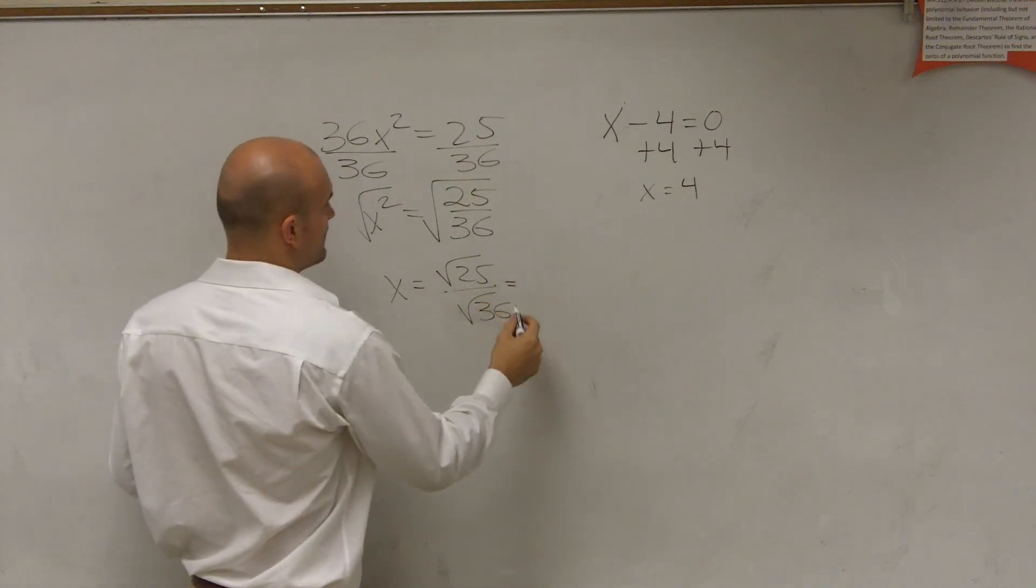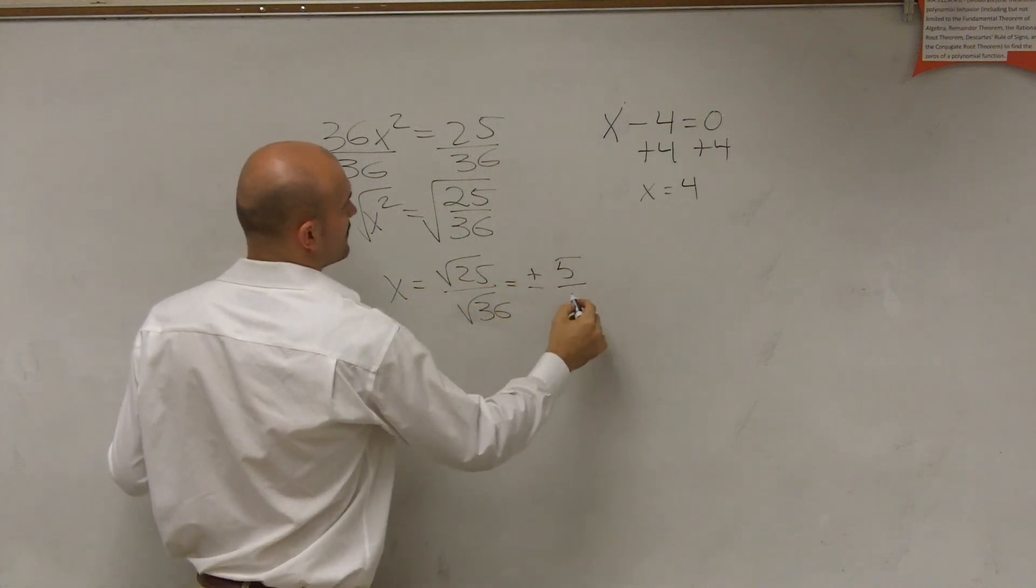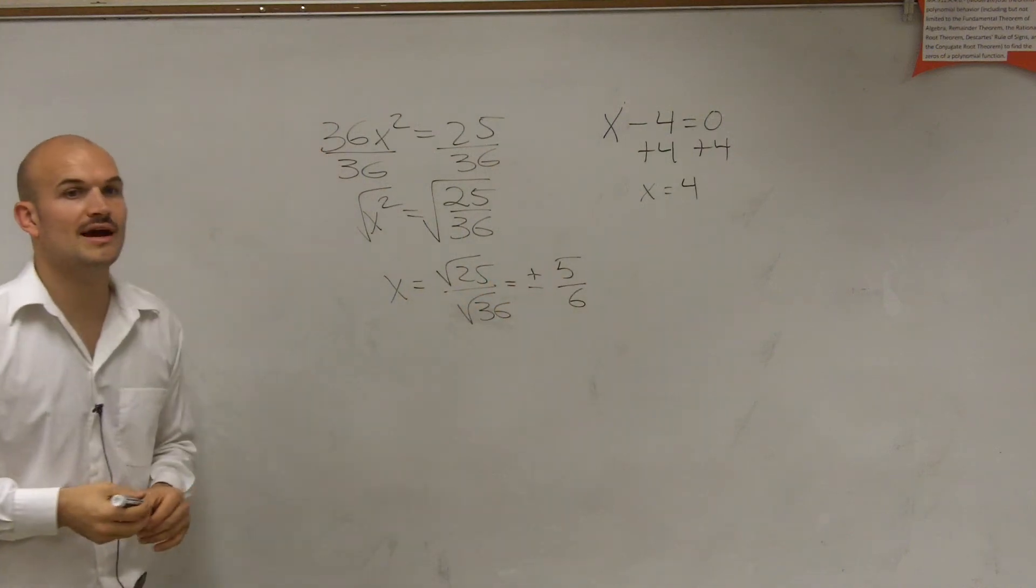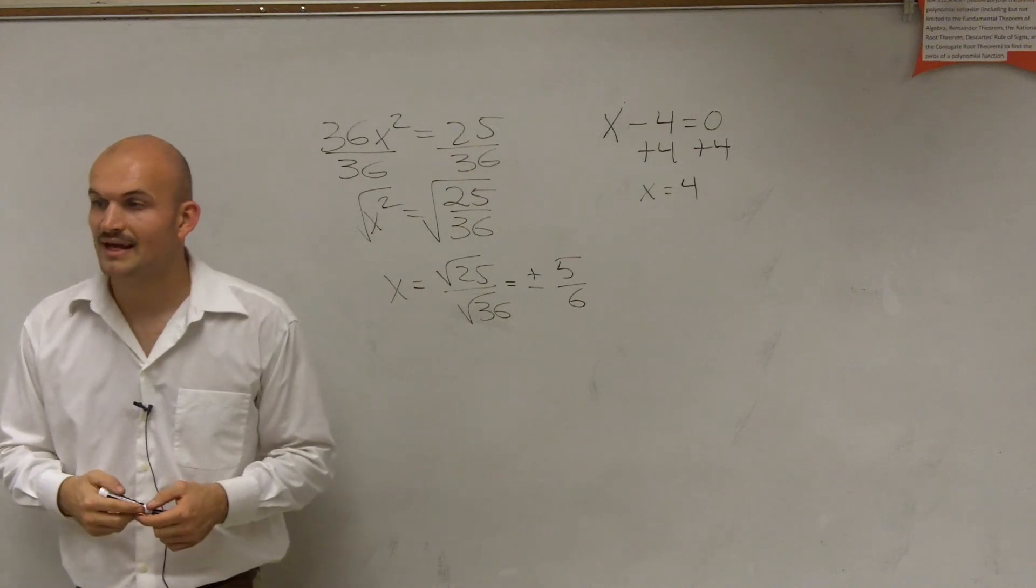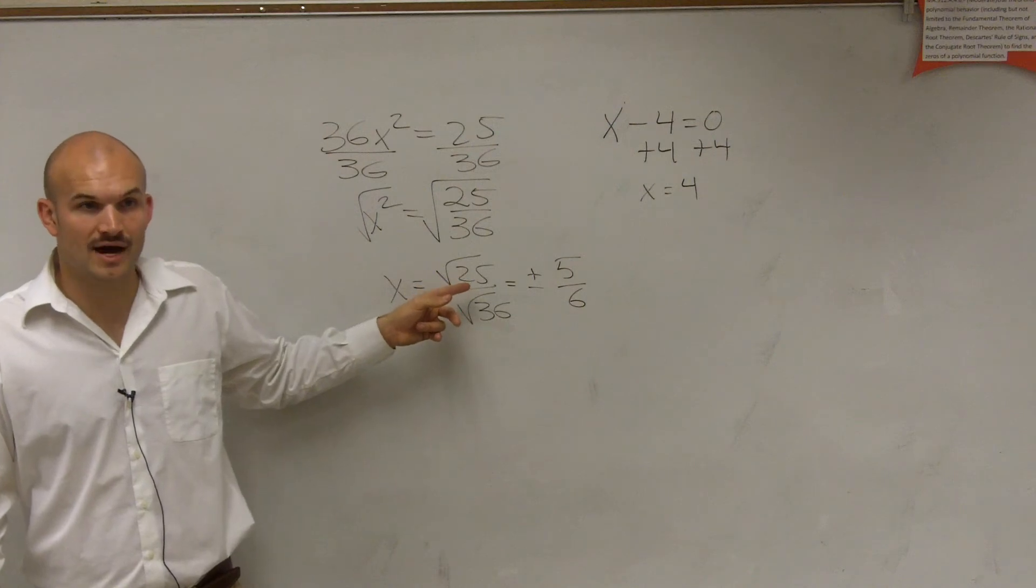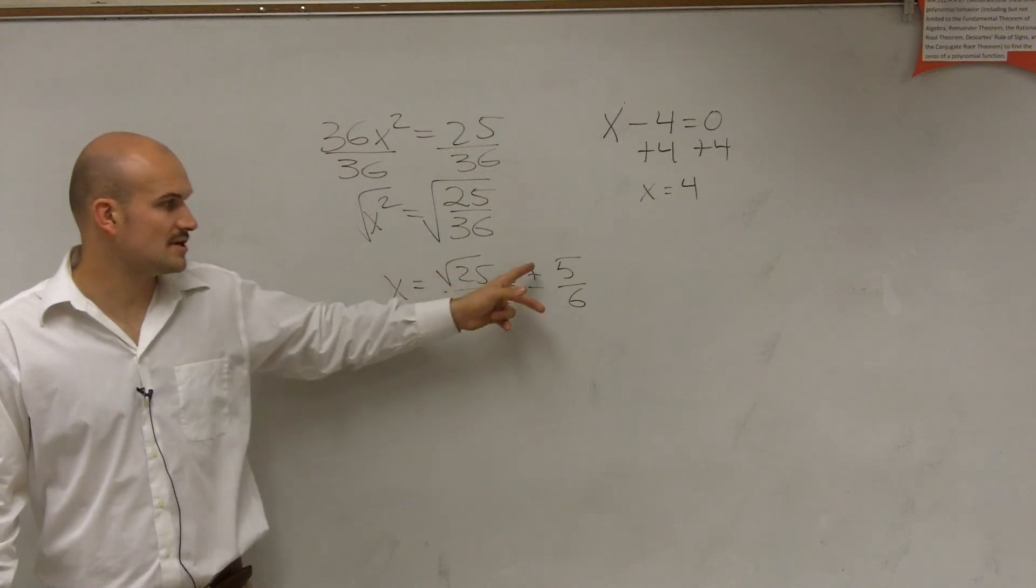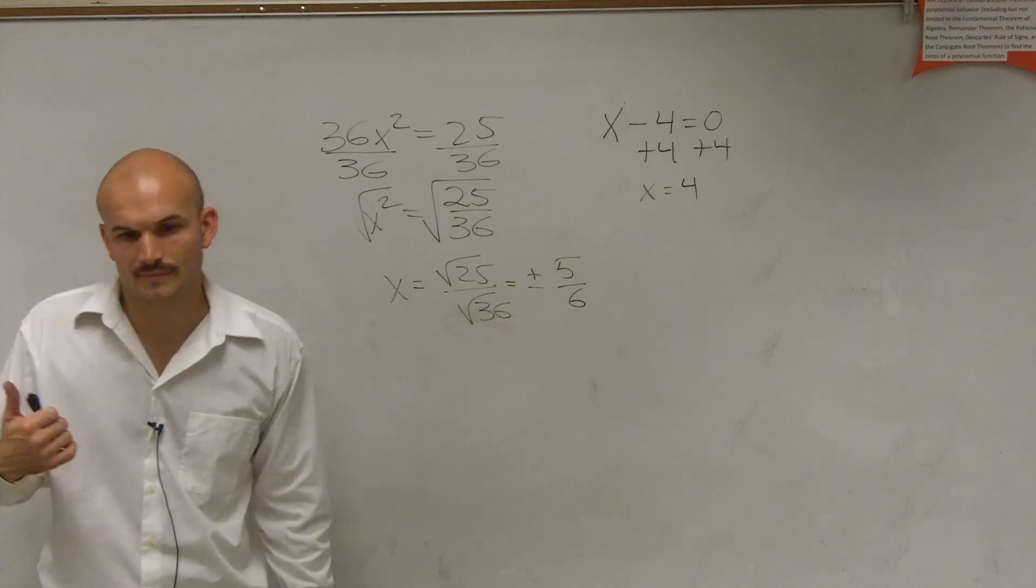Well, the square root of 25, well, actually, it's going to be plus or minus 5 over 6. Make sure you have to include a positive and a negative. All right? Because 5 times 5 gives you 25, and negative 5 times negative 5 gives you 25. So you have to include the positive and the negative. All right? There you go.